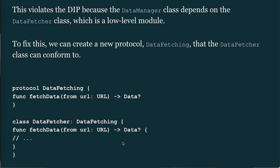To fix this, we create a DataFetching protocol that the DataFetcher class conforms to: protocol DataFetching { func fetchData(from url: URL) -> Data }; class DataFetcher: DataFetching { func fetchData(from url: URL) -> Data { ... } }.